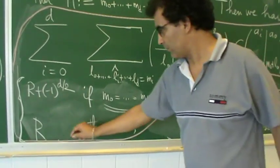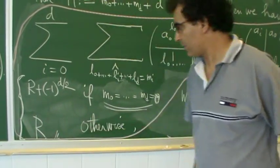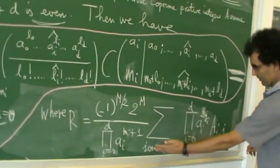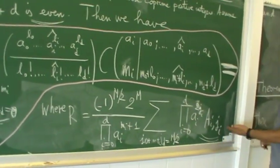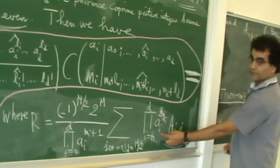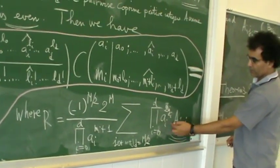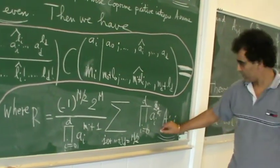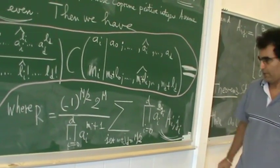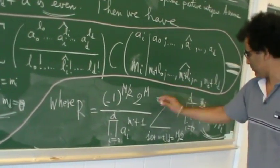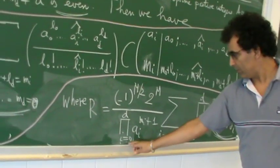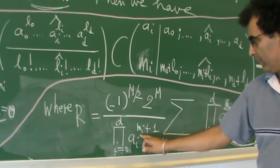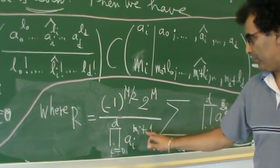Otherwise we obtain capital R. Capital R is a polynomial — this polynomial — with indeterminates A0 to AD, and the coefficient capital R divided by the product over all A_e to the M_e plus 1.